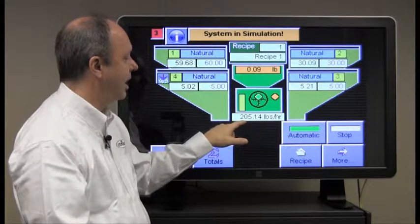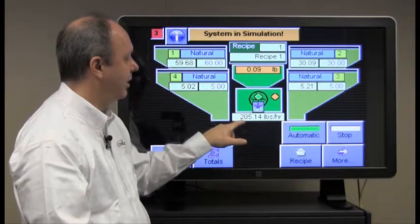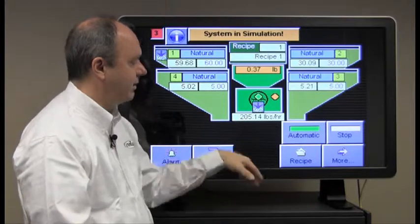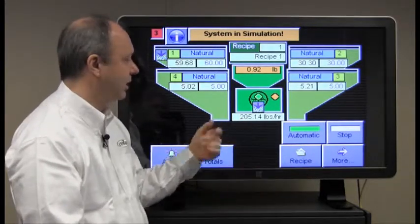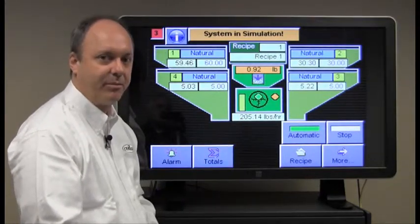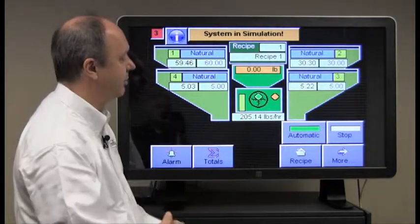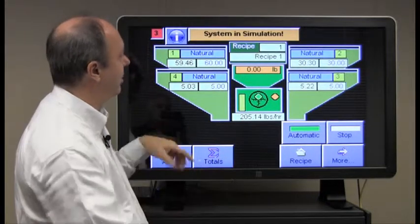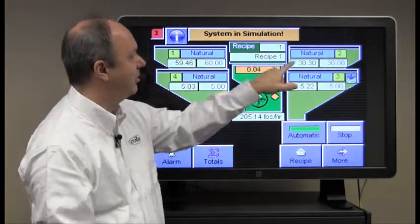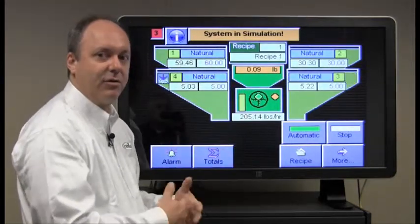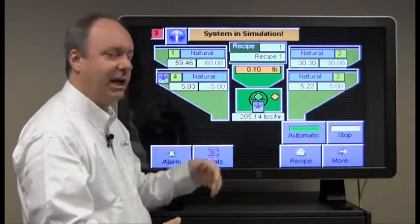This value here shows the operational rate of the blender created by the demand of the downstream process. In this particular case, just over 200 pounds per hour. So let's return to the recipe screen and see what we do when we want to change the material types. I'll do some examples and show you the effect of that on the way the batch is created.